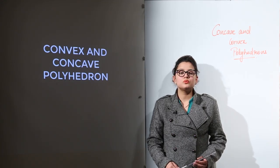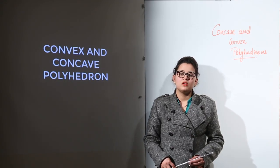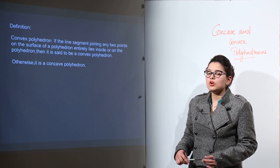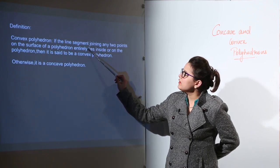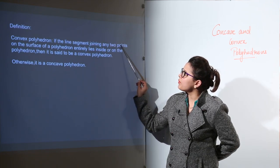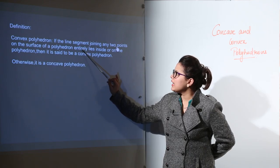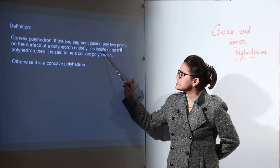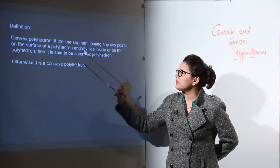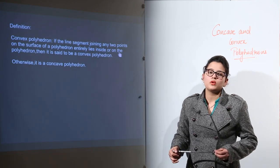Let us do concave and convex polyhedrons. Convex polyhedrons are those where the line segment joining any two points on the surface of a polyhedron lies entirely inside or on the polyhedron. That will be considered as a convex polyhedron.